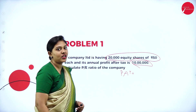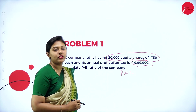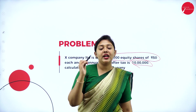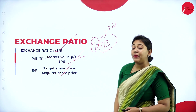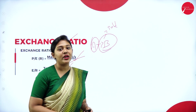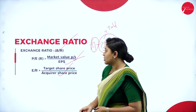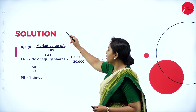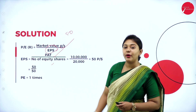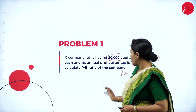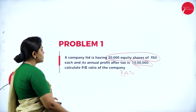In the question, market price is given and the total number of equity shares are given. But EPS is not given — earning per share is not given in the question. So we need to calculate earning per share first and then substitute into the formula. Market price is 50 rupees. To calculate EPS, the formula is profit after tax divided by number of shares. Profit after tax is 10 lakh and the total number of shares is 20,000 equity shares.